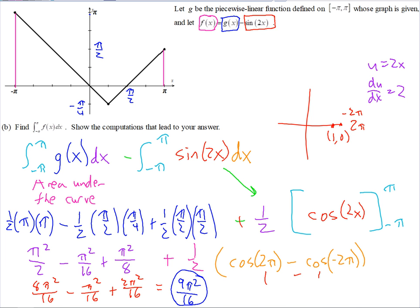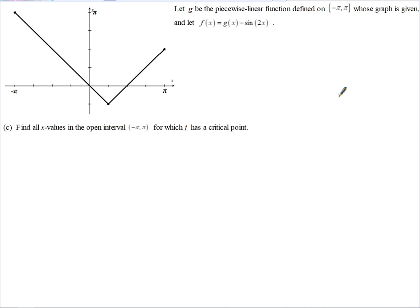So all we're left with is this part. And we've got a common denominator, we can combine those. 8π² minus 1π² over 16 is 7, plus 2 gives you 9π²/16. One more that's a little bit different. On this one, we've got the same piecewise function. Except this time it says find all the x values for which f has a critical point.